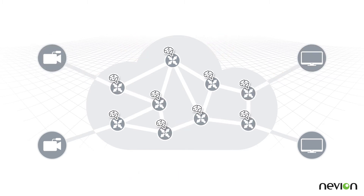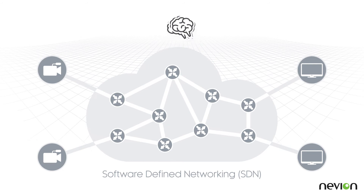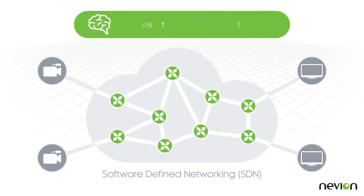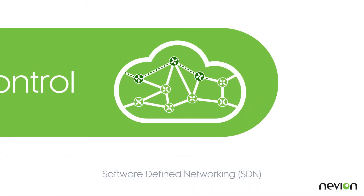The other way of controlling IP media networks is through software-defined networking. SDN takes control away from the switches and hands it to a centralized controller, which has a complete view of the network and the media flows, both existing and planned.